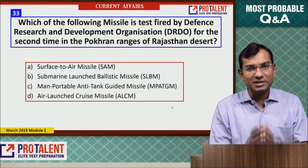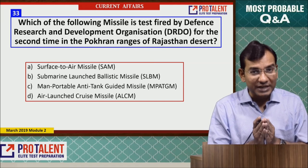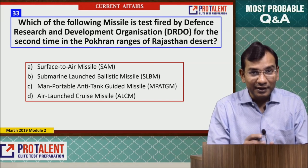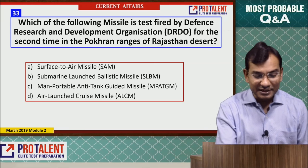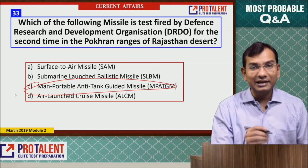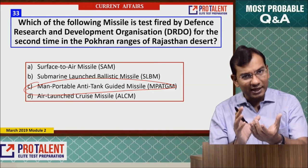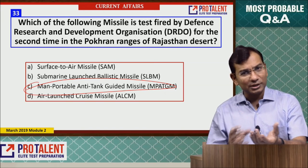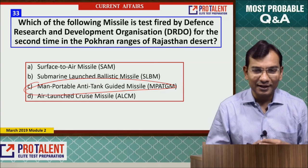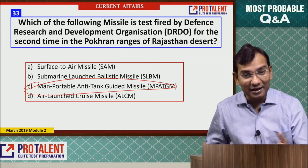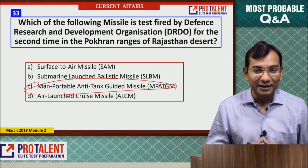Question 33: Which missile was test-fired by DRDO for the second time in Pokhran ranges? It is the Man-Portable Anti-Tank Guided Missile — a missile that a person can carry and launch, which is a very interesting and significant development by DRDO.